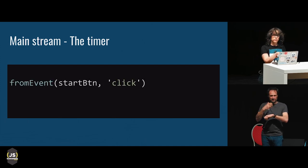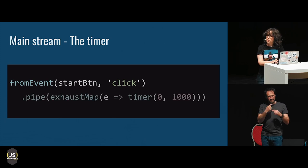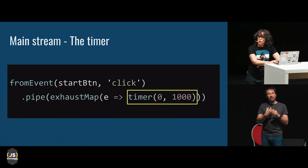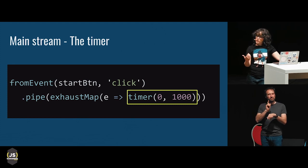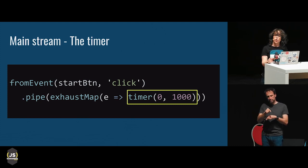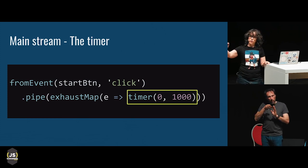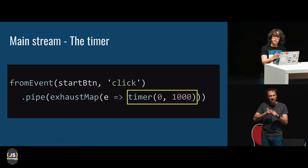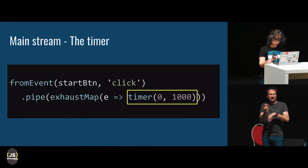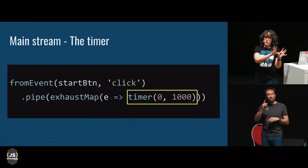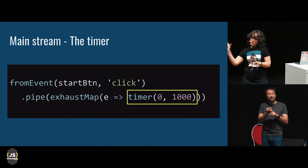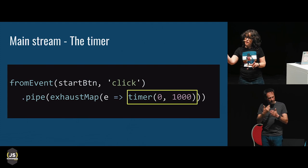The way it looks in code: I start with a fromEvent method like we saw before, and I can create a stream that emits every second using the timer function that is part of RxJS. It takes a second argument, a duration, and emits values every duration. The first argument tells it when to start — I want it to start immediately, so I'm passing in zero. The fromEvent makes sense and the timer probably makes sense, but they are joined with this weirdly named operator called exhaustMap.